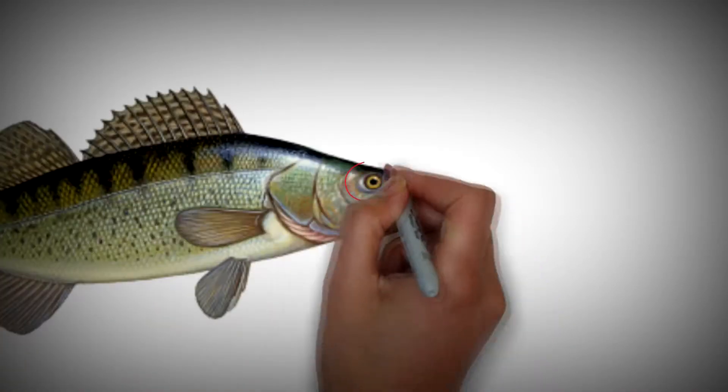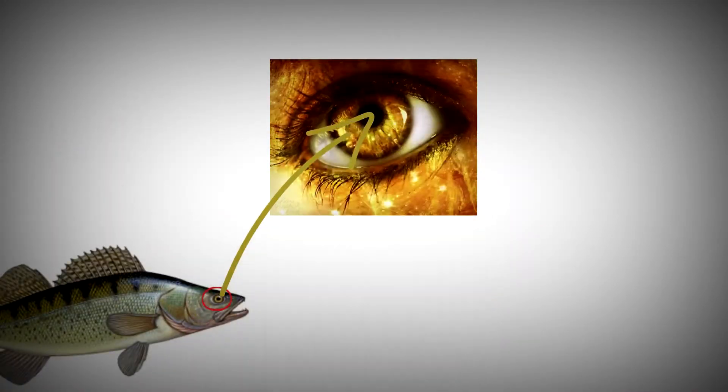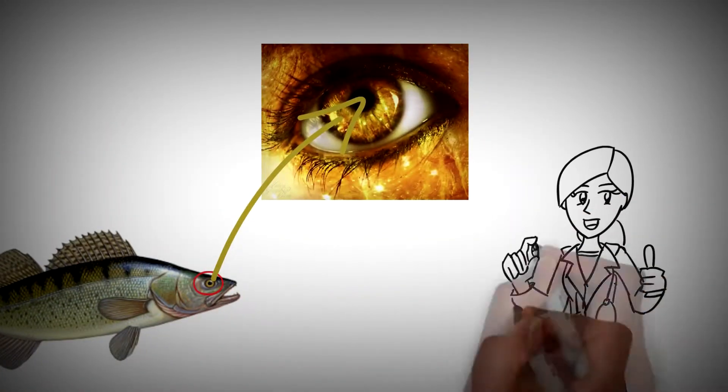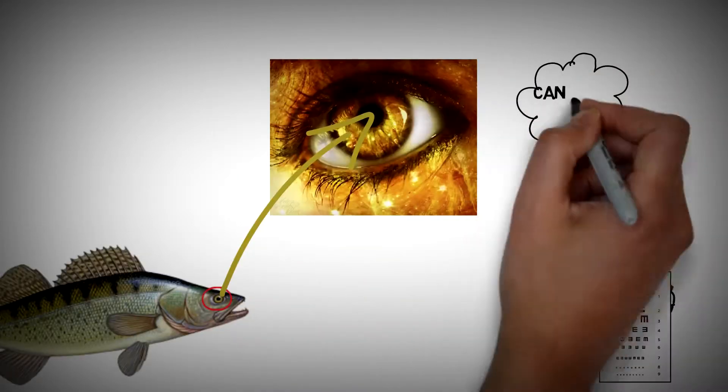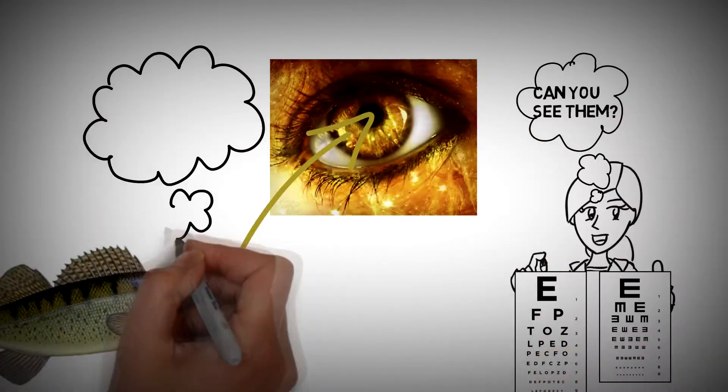The Zander's eyes play an important role in finding baitfish. Its vision is exceptional in the dark, as it's mainly a nocturnal predator.